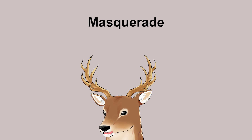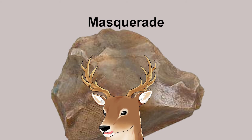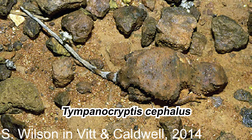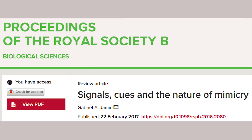Let's talk about masquerade. All this time I've been talking about other organisms as the model, but what if the model is not connected to organisms at all — like a rock? That's called masquerade, and it does happen. For example, the lizard Tympanocryptis cephalus. In a way, this is a special case of mimicry, at least according to this publication.